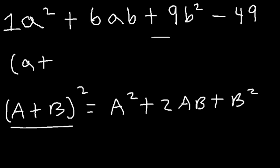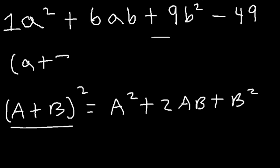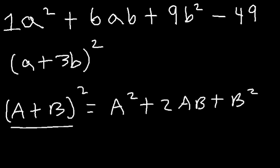Capital B is the square root of 9b squared, which is 3b. So to factor the first three terms, it's going to be (a + 3b)(a + 3b), or simply (a + 3b) squared.